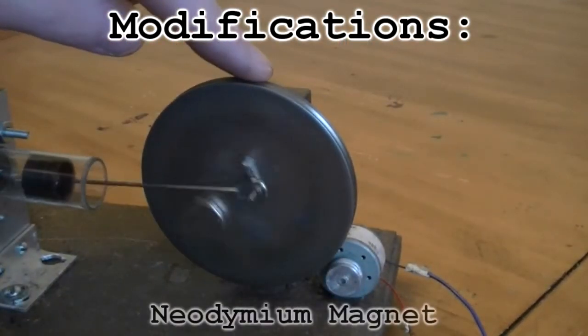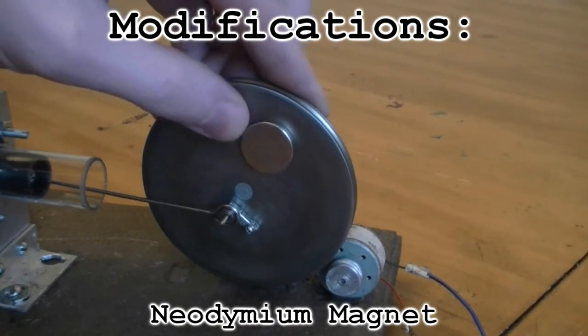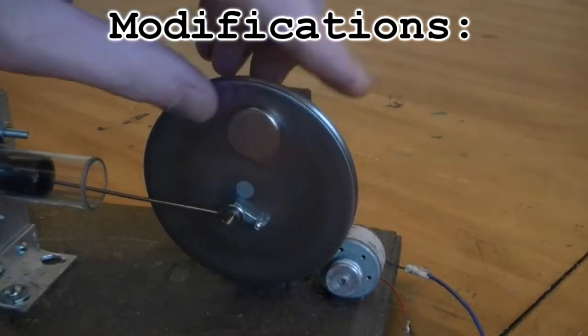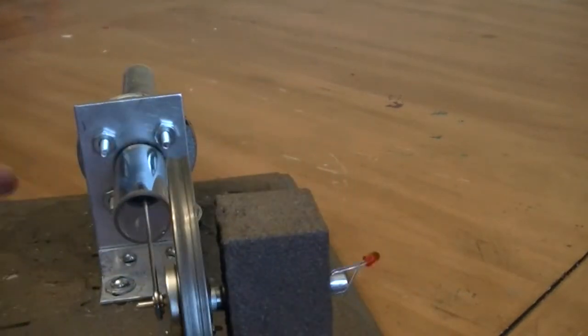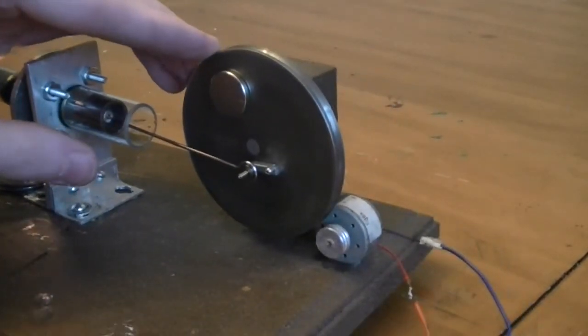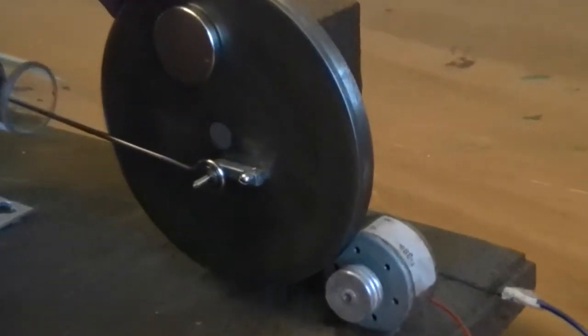I added a neodymium magnet to the flywheel to balance the weight of the graphite piston. I'm not sure how much this has improved the performance of the engine if it has at all. The magnet is held in place by its own magnetic pull on the steel flywheel. Neodymium magnets are very strong and I haven't noticed any movement of the magnet while using a candle for heat.